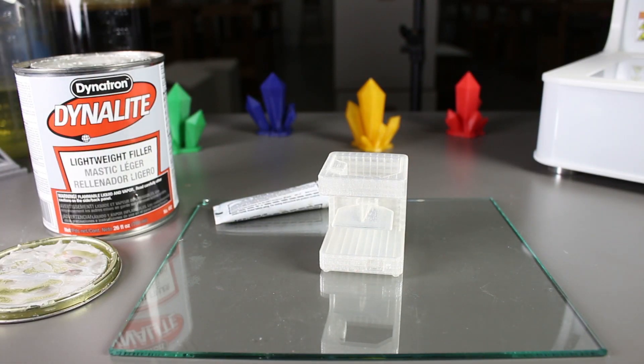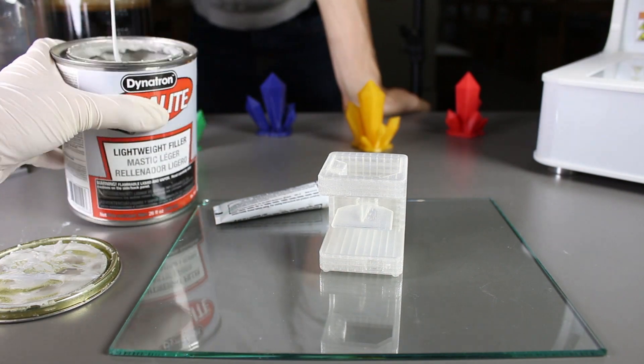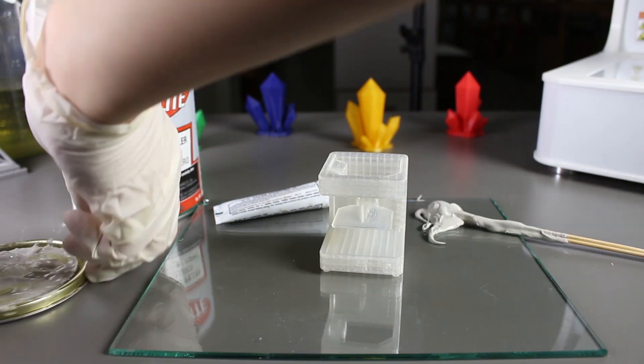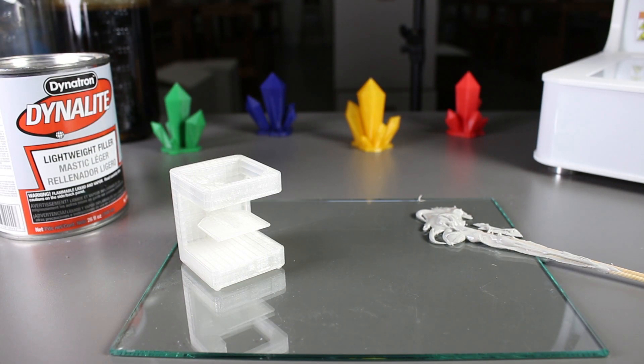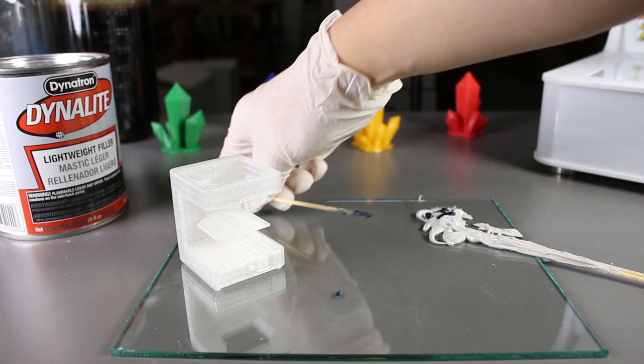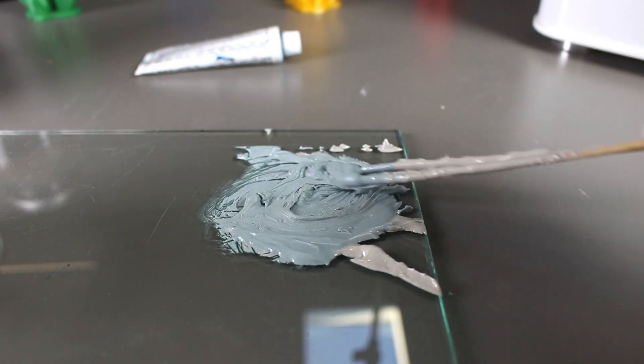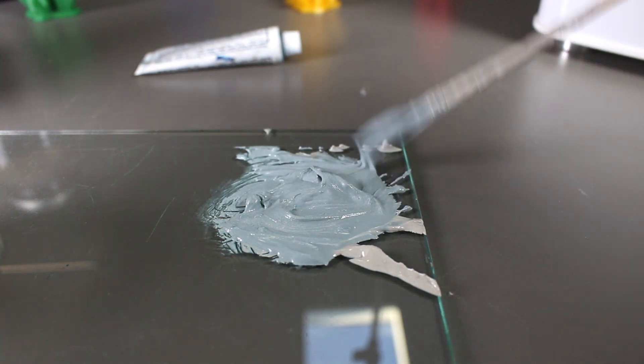We have to mix the jar thoroughly from bottom to top and then I'll take some out and put it onto our glass plate. We have to mix some cream hardener into it afterwards and the color will turn blue, like this. Mix the two chemicals thoroughly and then we can start to apply it.